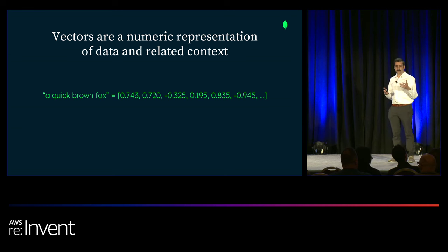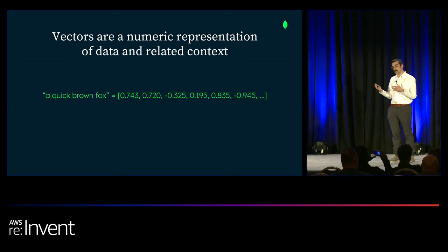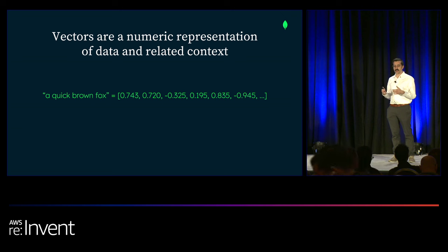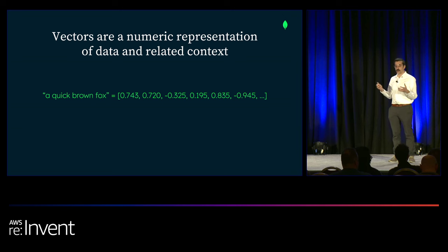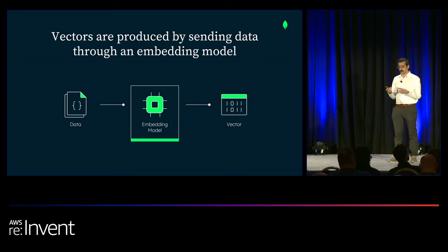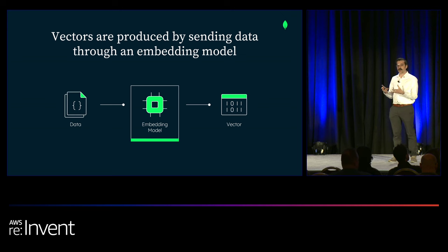For instance, 'quick' is not slow — it's more akin to fast. 'Brown' is a color; it's not yellow, but it's close. A fox is an animal. This is the related context that you are now able to embed inside of these high-dimensional vectors. This is a super powerful concept — representing semantic meaning inside of a more structured piece of data. The way you go about getting these vectors is you take data, whether it be text, audio, or video, put it through an embedding model trained on it, and it gets turned into a vector.